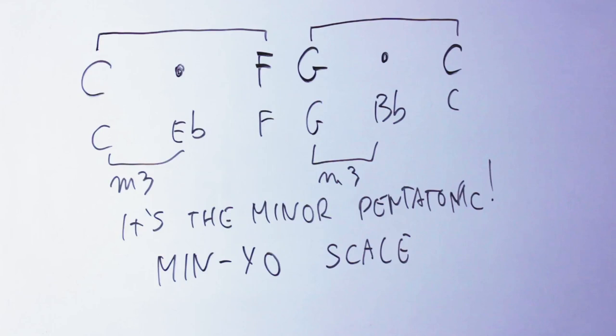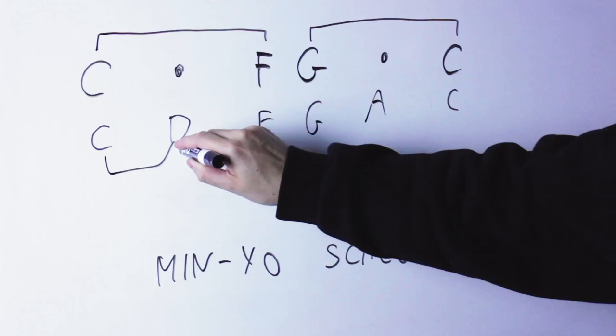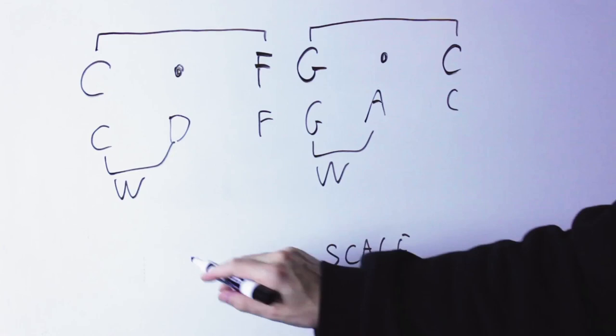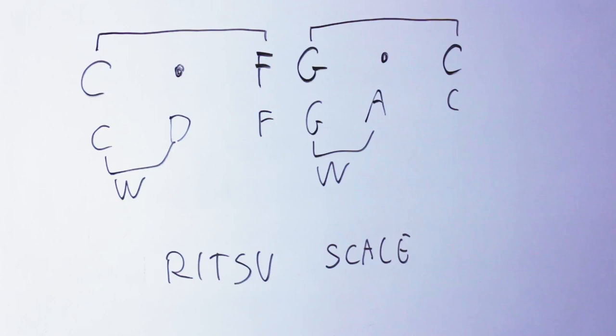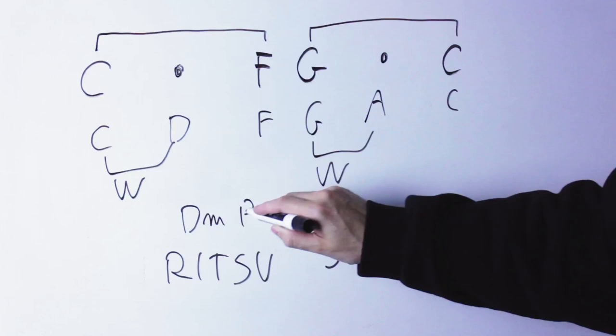The third scale is the one you obtain when the middle note of your trichord is a whole step above the lowest note. This scale is called the Ritsu scale, and it sounds, again, similar to a minor pentatonic because it is, but it's not the C minor pentatonic, it's the D minor pentatonic, or if you want, it's a mode of the D minor pentatonic, so it sounds interesting.